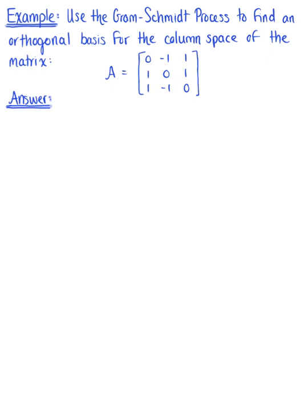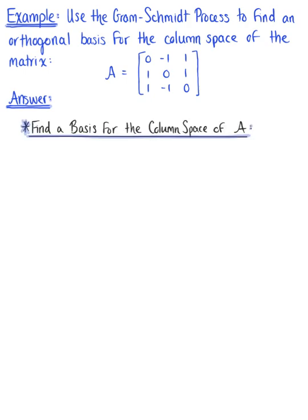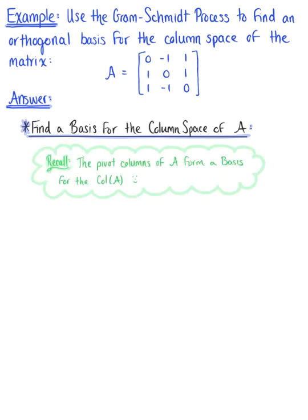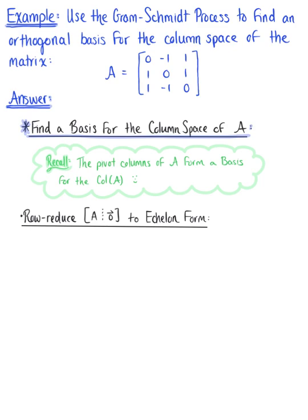Apply the Gram-Schmidt process to find an orthogonal basis for the column space of matrix A. We are given a 3 by 3 matrix A. The very first thing we need to do is find a basis for the column space. The pivot columns of matrix A form a basis for the column space, so we need to row reduce matrix A augmented with the zero vector to echelon form to identify the pivot columns.